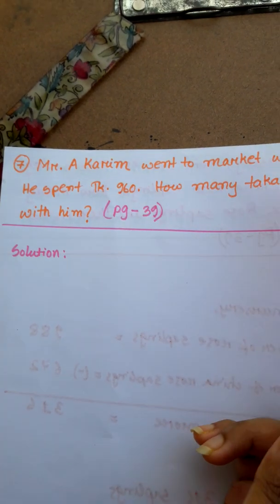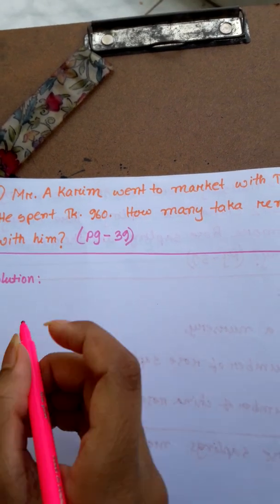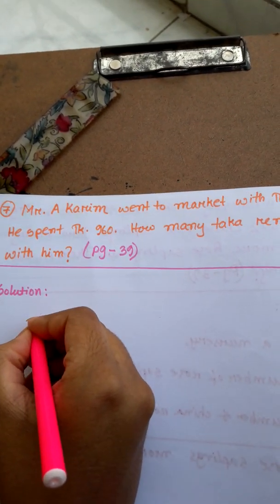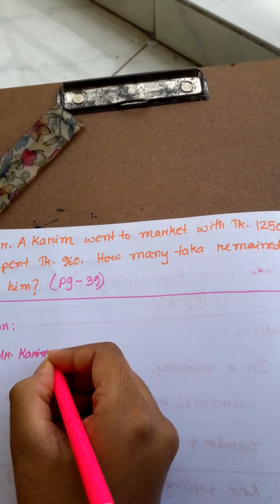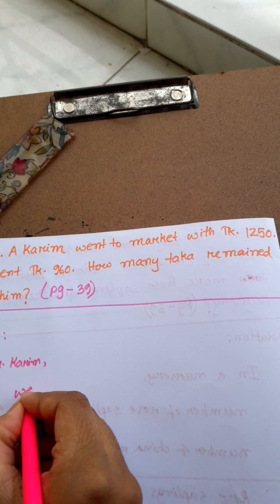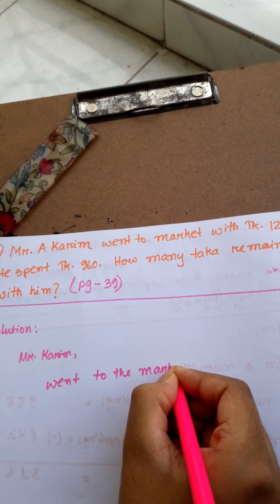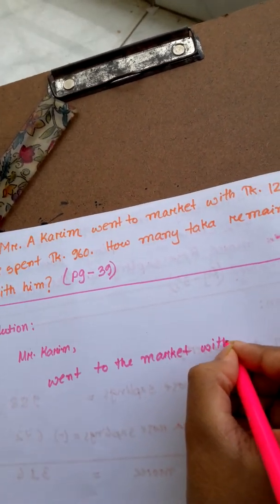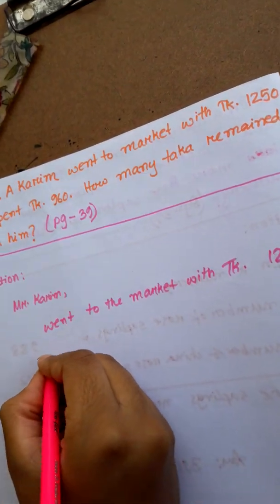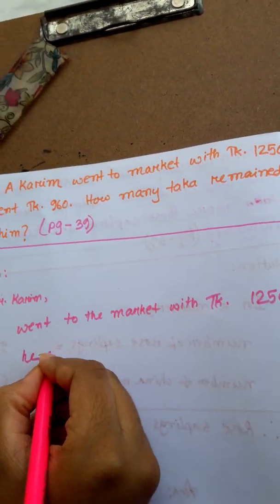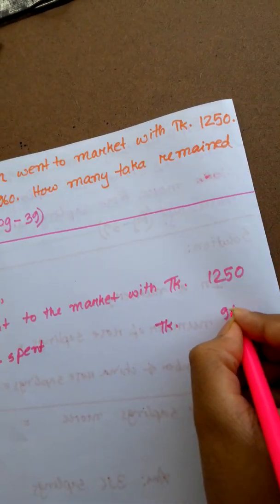Mr. Kurim went to market with Taka 1,250 and he spent 960.